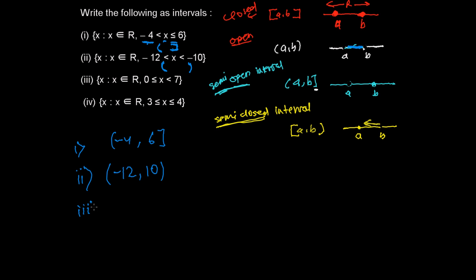And the third one is X such that X belongs to real numbers, and here X is greater than or equal to 0 means closed bracket, and is smaller than 7 but not equal to 7. You can take this A but you cannot take B, just smaller than B you can take. So it is 0 and 7, from 7 it is open.